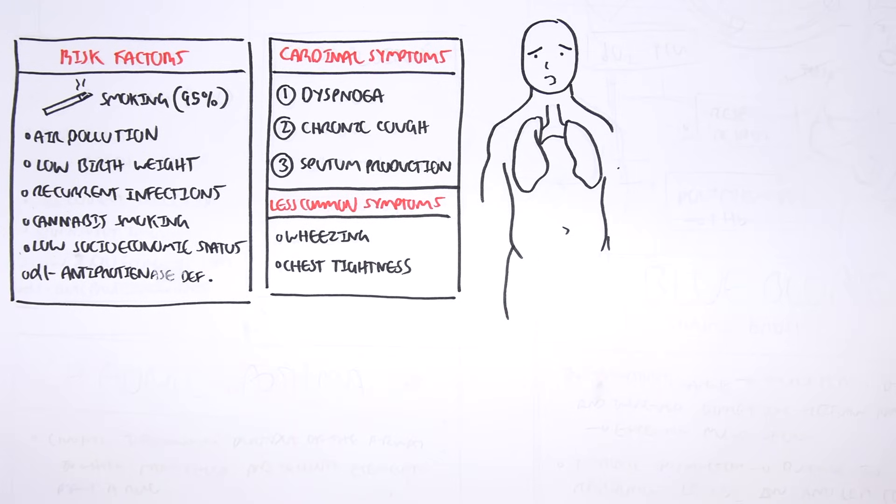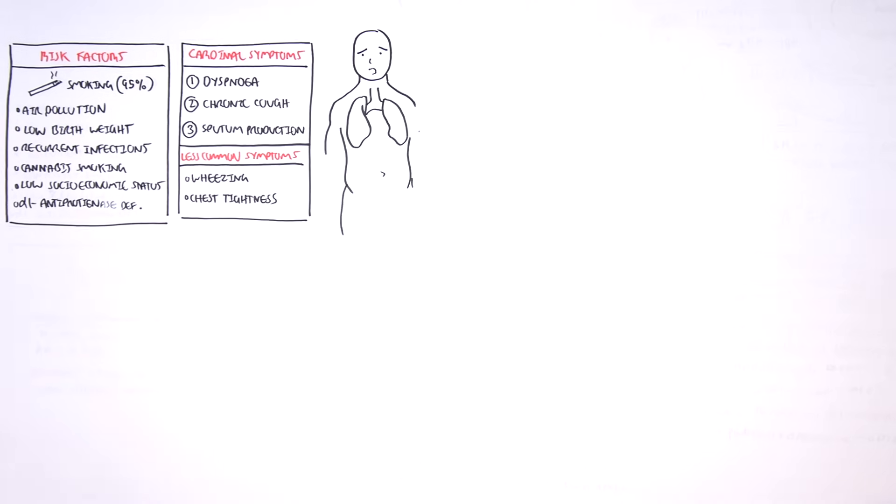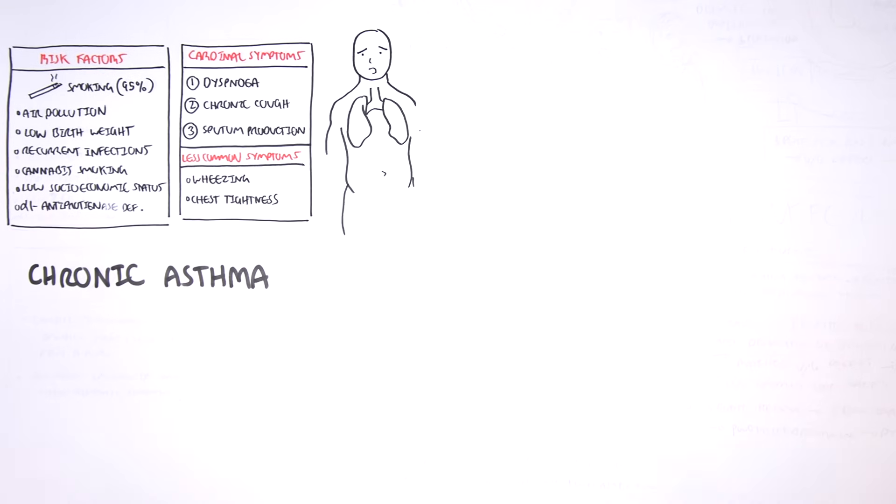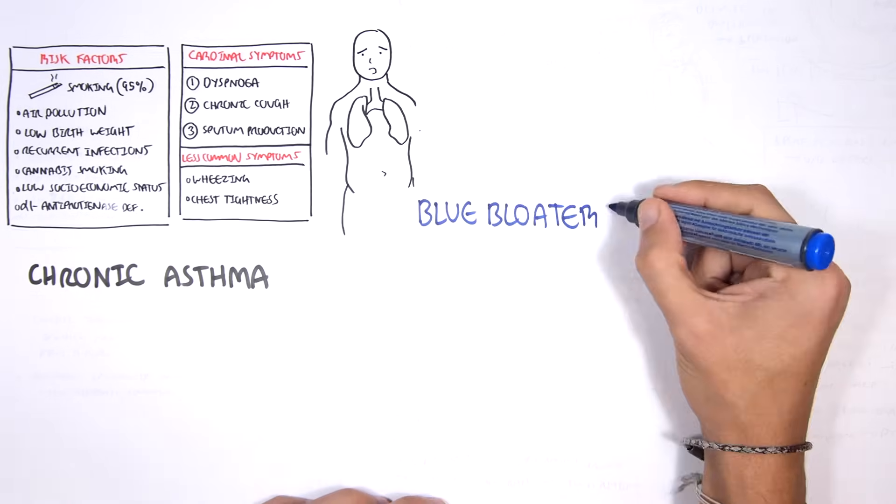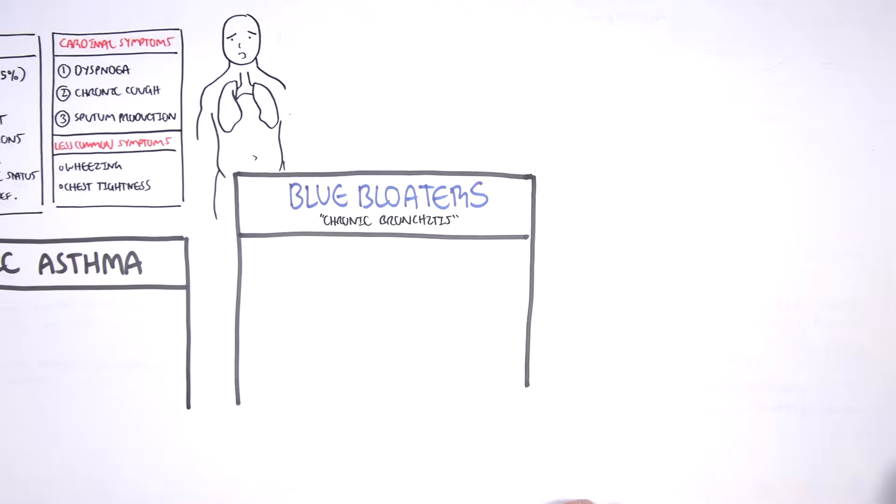COPD stands for Chronic Obstructive Pulmonary Disease and encompasses a variety of diseases. The big three COPD chronic obstructive pulmonary diseases are chronic asthma, the blue bloaters which is chronic bronchitis, and the pink puffers which is emphysema.